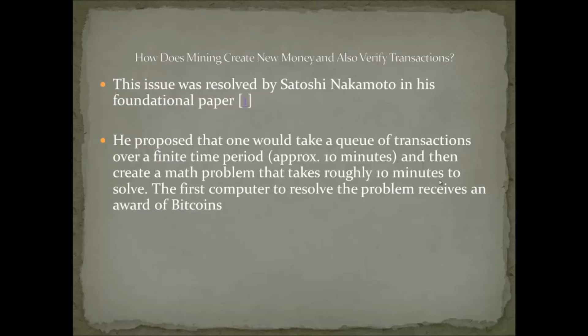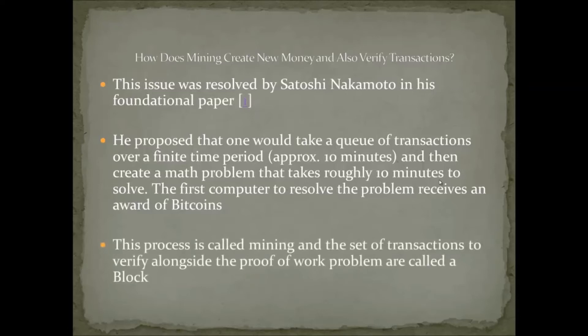Here's the brilliance of Satoshi's solution: by solving this problem, every single transaction that occurred over the last 10 minutes is verified. Every Bitcoin node, every client, every person using a Bitcoin wallet believes those transactions are indeed legitimate. If you wait six or seven time periods, the probability of any transaction being illegitimate is astronomically low — essentially impossible. The process of doing this is called mining, and the set of transactions verified along with the proof of work is called a block.